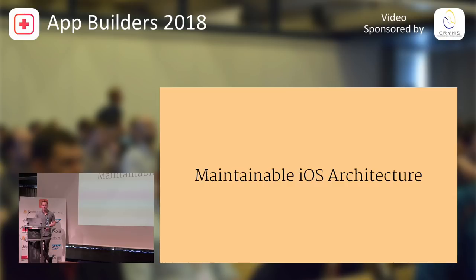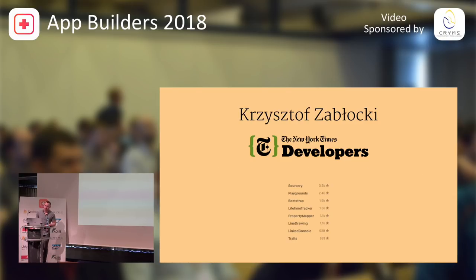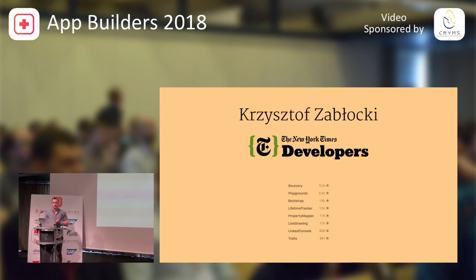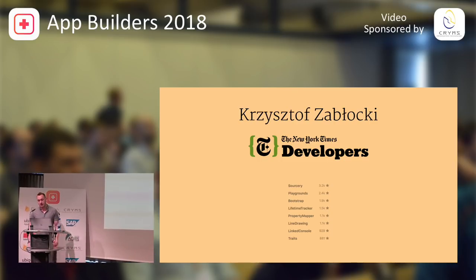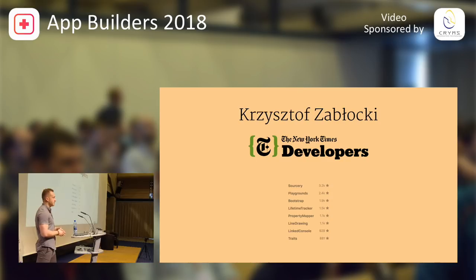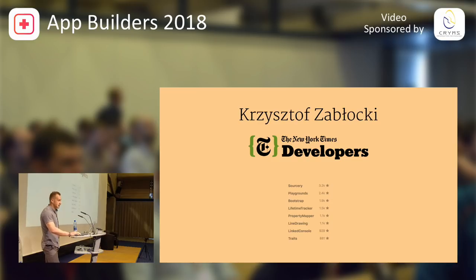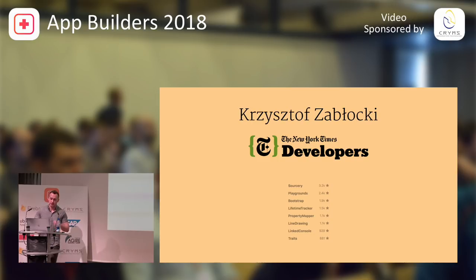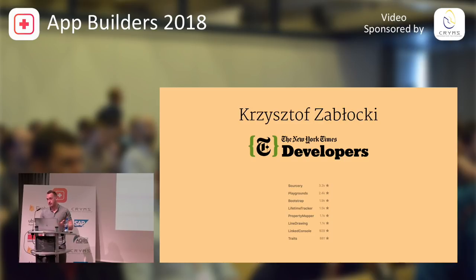Who am I? I'm an iOS consultant. I currently lead development at the New York Times, but I also often get hired to help teams improve their app architecture, review their source code, and make them more efficient. My open source projects are powering more than 30,000 applications. The last eight years I spent working on tools and libraries — one of the most popular is Sorcery. I also have my own indie company with an app called Foldify, which is an Apple Essential, and I've maintained it for six years.